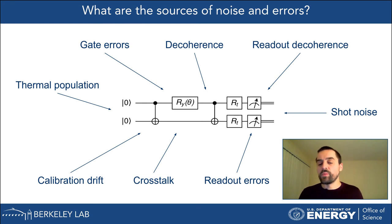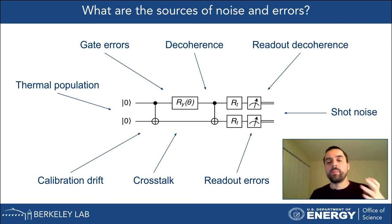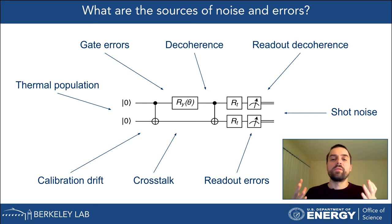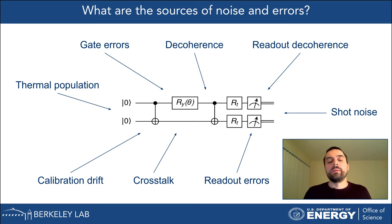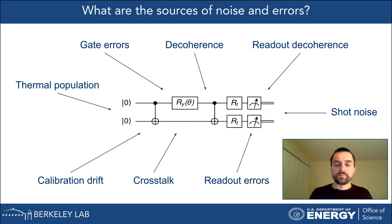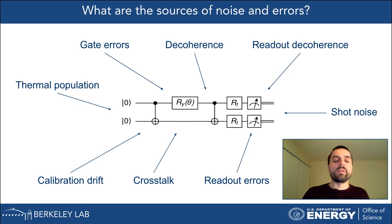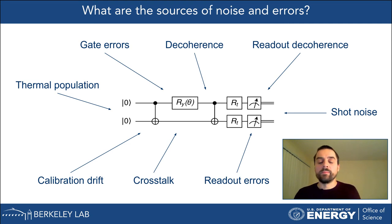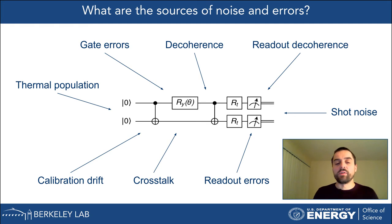I also want to mention calibration drift. A quantum computer must be calibrated to perform well, but the calibration parameters change over time. So after calibrating now, in one or four hours the calibration will no longer be as accurate. Calibration must be performed very frequently to keep the quantum computer operating properly.